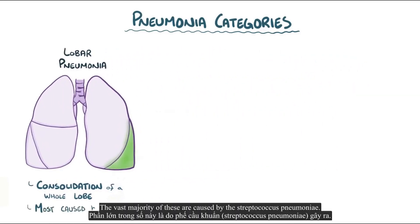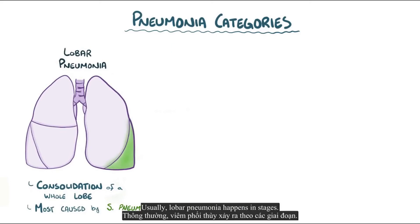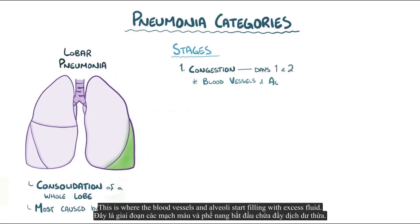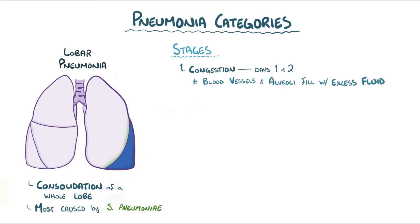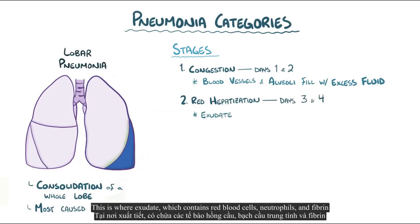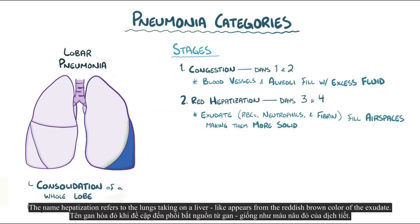The vast majority of lobar pneumonias are caused by Streptococcus pneumoniae. Lobar pneumonia usually happens in stages. The first stage is congestion, between one and two days, where the blood vessels and alveoli start filling with excess fluid. The next stage is red hepatization, between days three and four, where exudate containing red blood cells, neutrophils, and fibrin starts filling the air spaces and makes them more solid. The name hepatization refers to the lungs taking on a liver-like appearance from the reddish-brown color of the exudate.